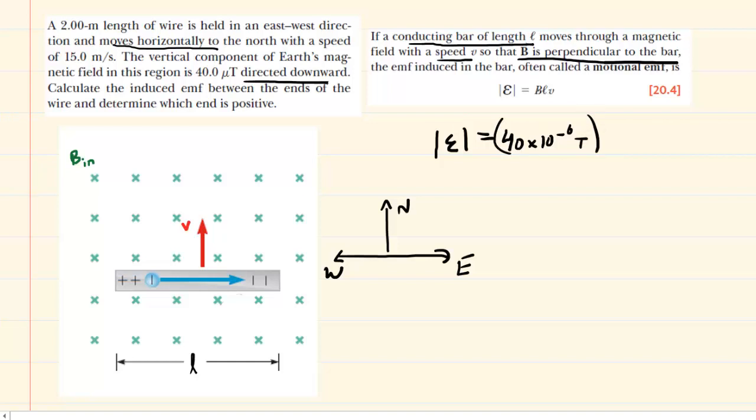Then we multiply by the length, which is 2 meters, and then finally by the speed, which is 15 meters per second. So when you punch this into your calculator, you should get 0.0012. This is EMF, so the unit will be in volts.